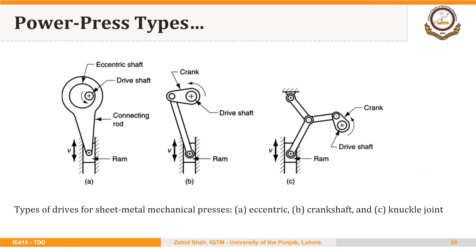Different drives can be used for mechanical presses — an eccentric drive, a crankshaft, or a knuckle joint. All of these convert rotary motion into reciprocating motion of the ram.